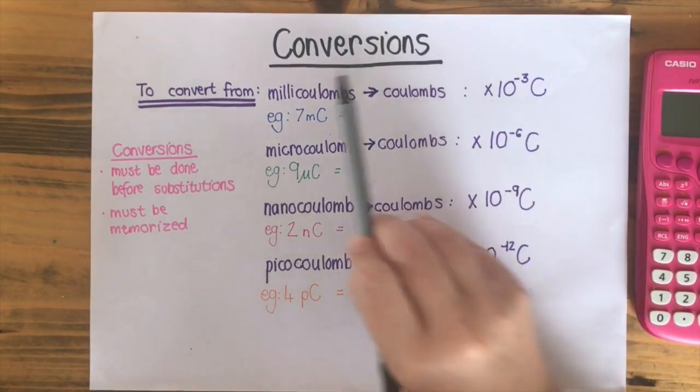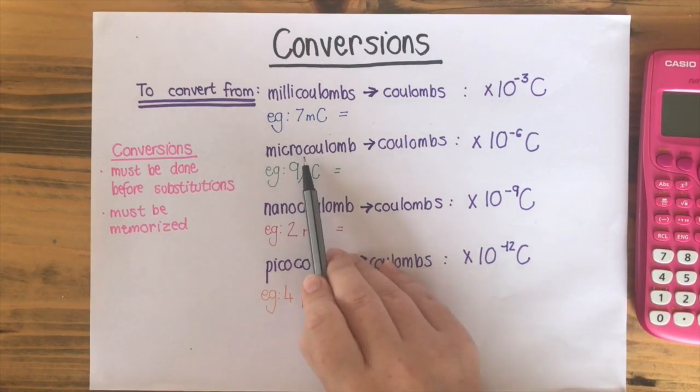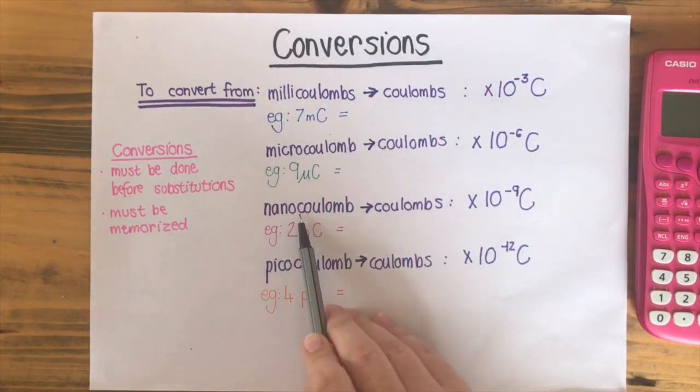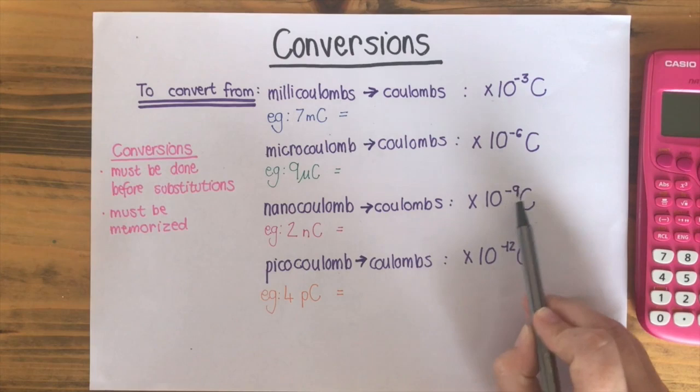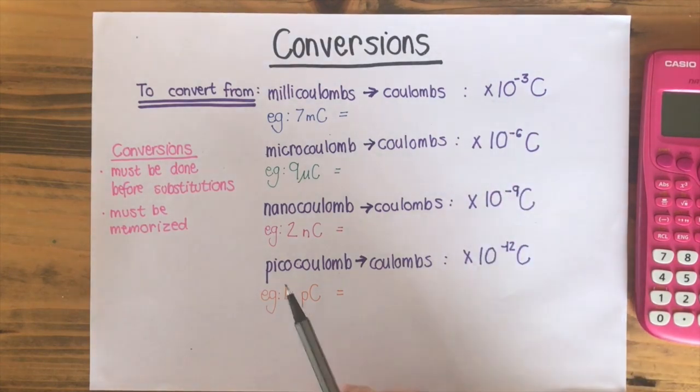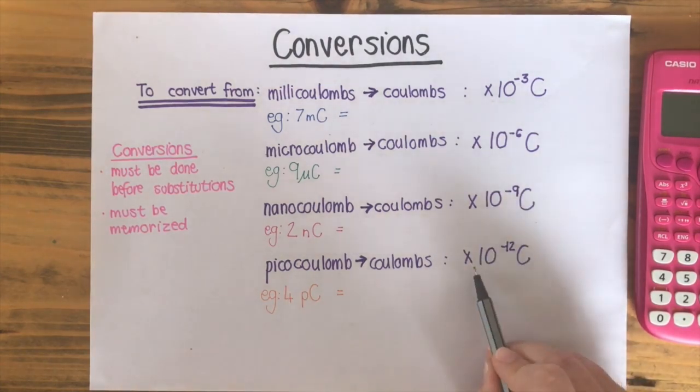So 10 to the minus 3 goes with millicoulombs. Microcoulombs, 10 to the minus 6. Nanocoulombs is times 10 to the power of minus 9 and picocoulombs is times 10 to the minus 12 coulombs.